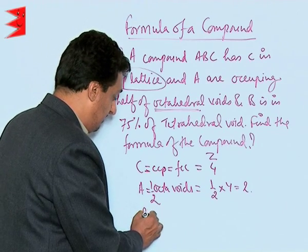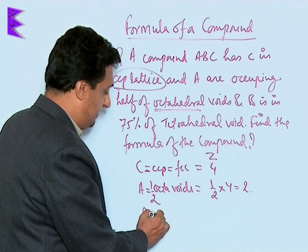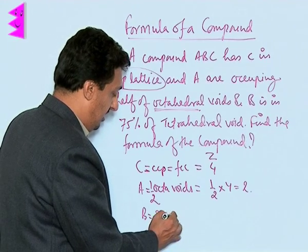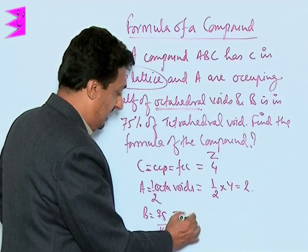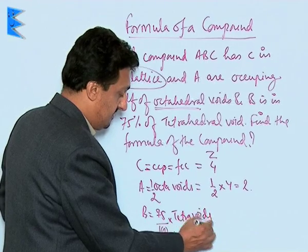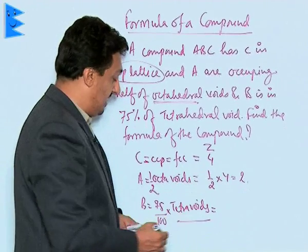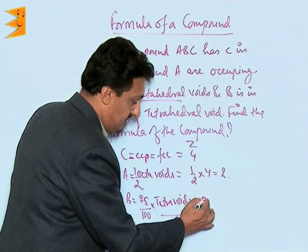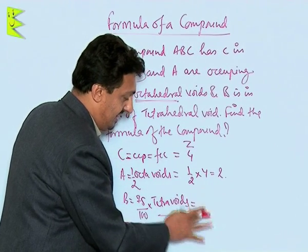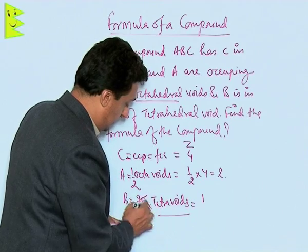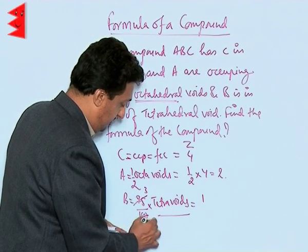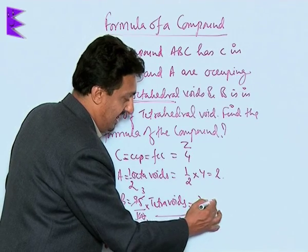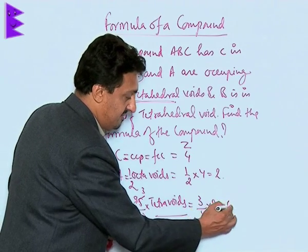Now let us talk about B. B is in 75% — that is 75/100, or 3/4 — of the tetrahedral voids. How many tetrahedral voids are there in an FCC unit cell? It is 8. So it is 3/4 of 8, which comes out to be 6. So the number of B atoms per unit cell is 6.